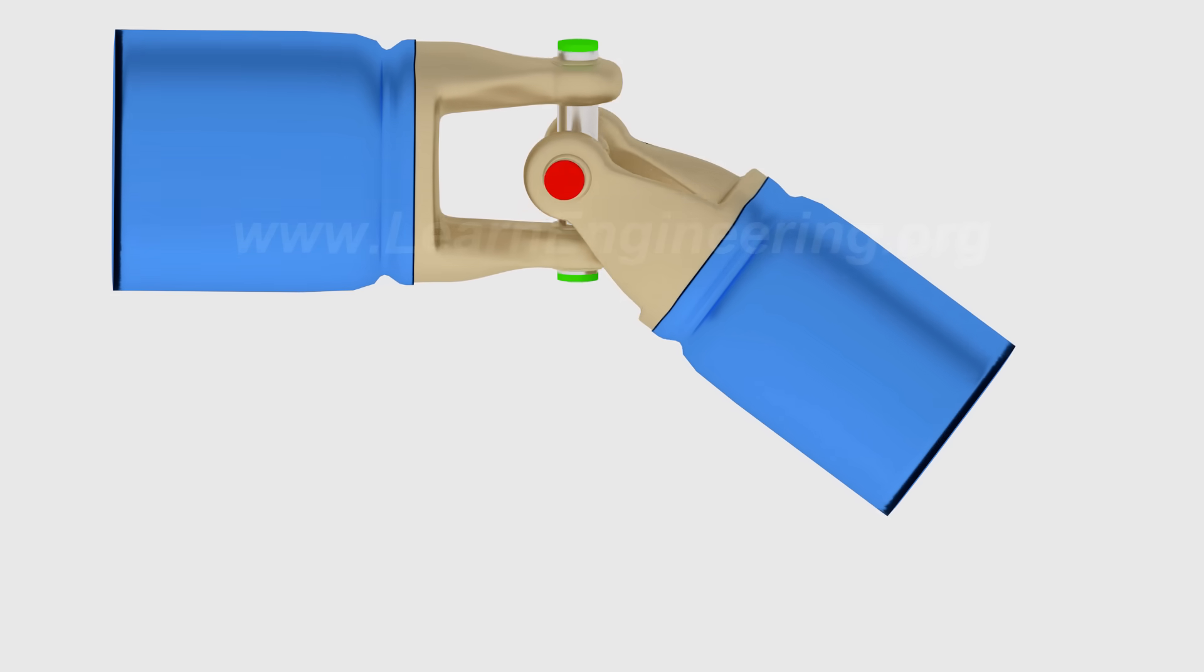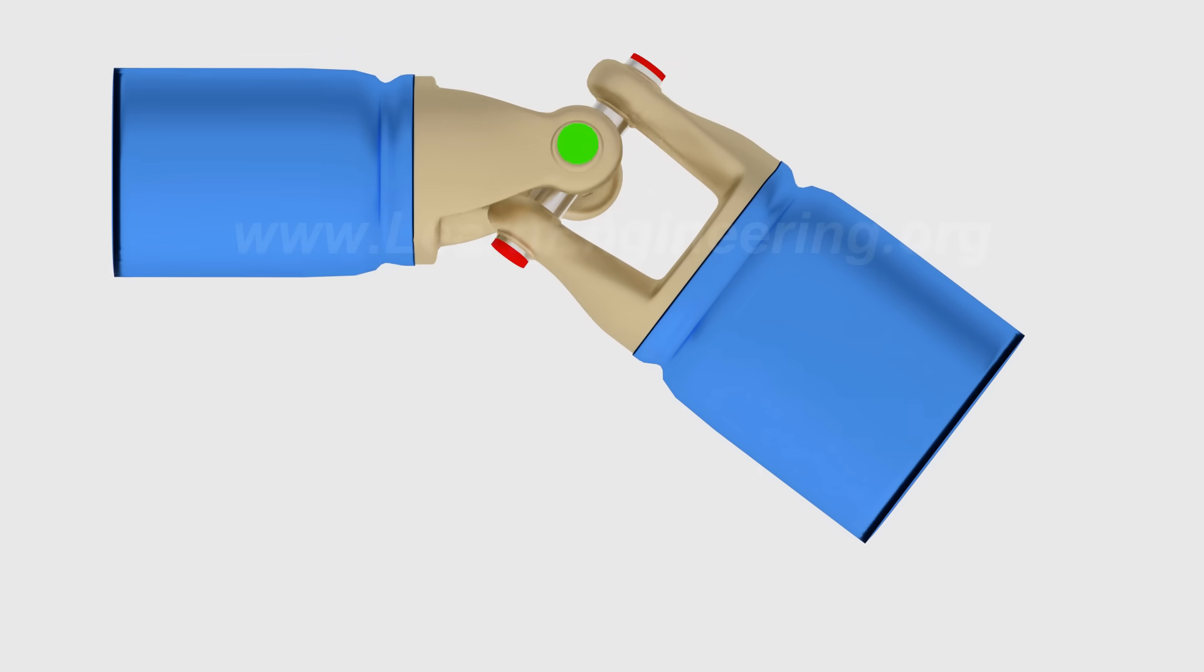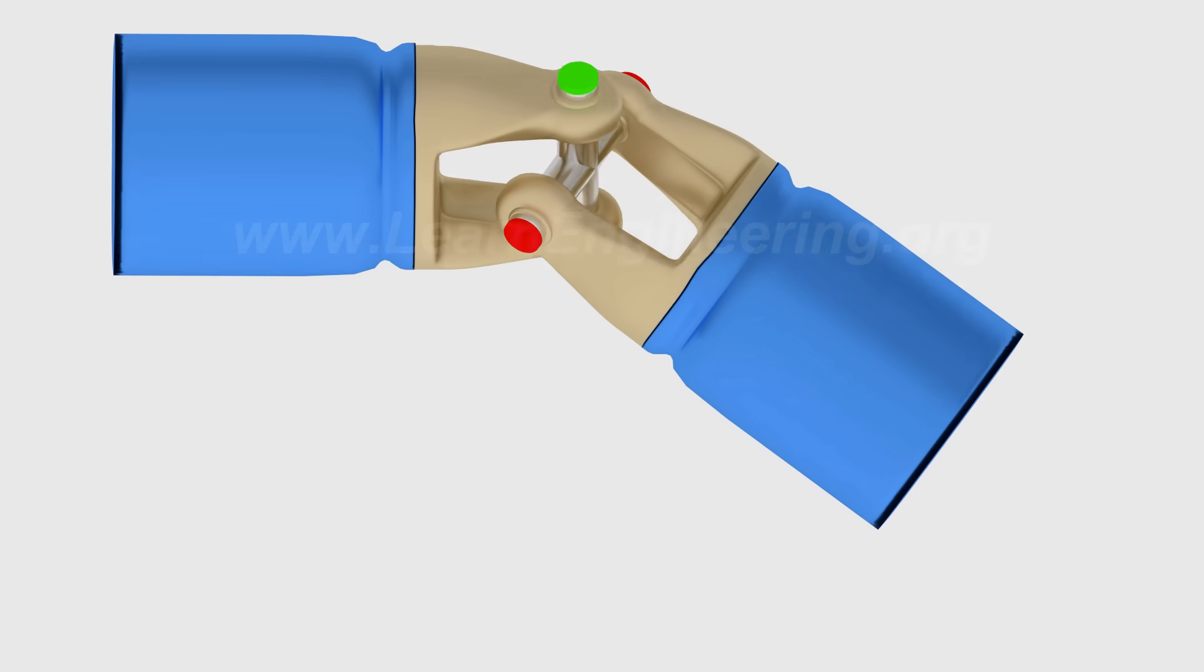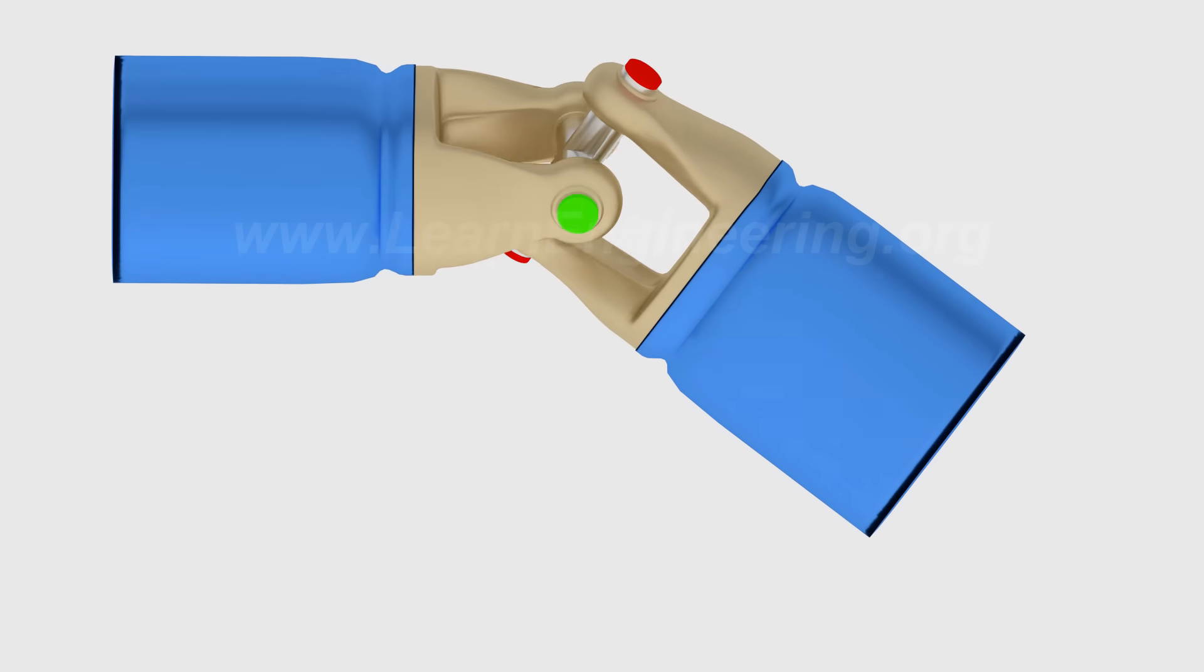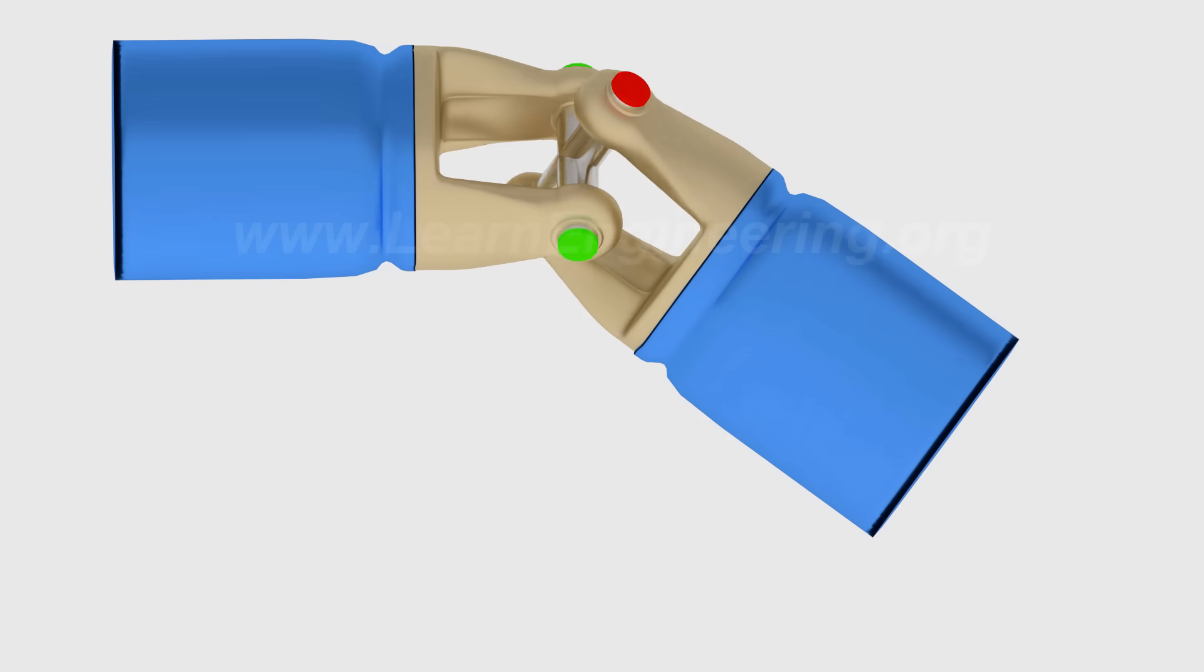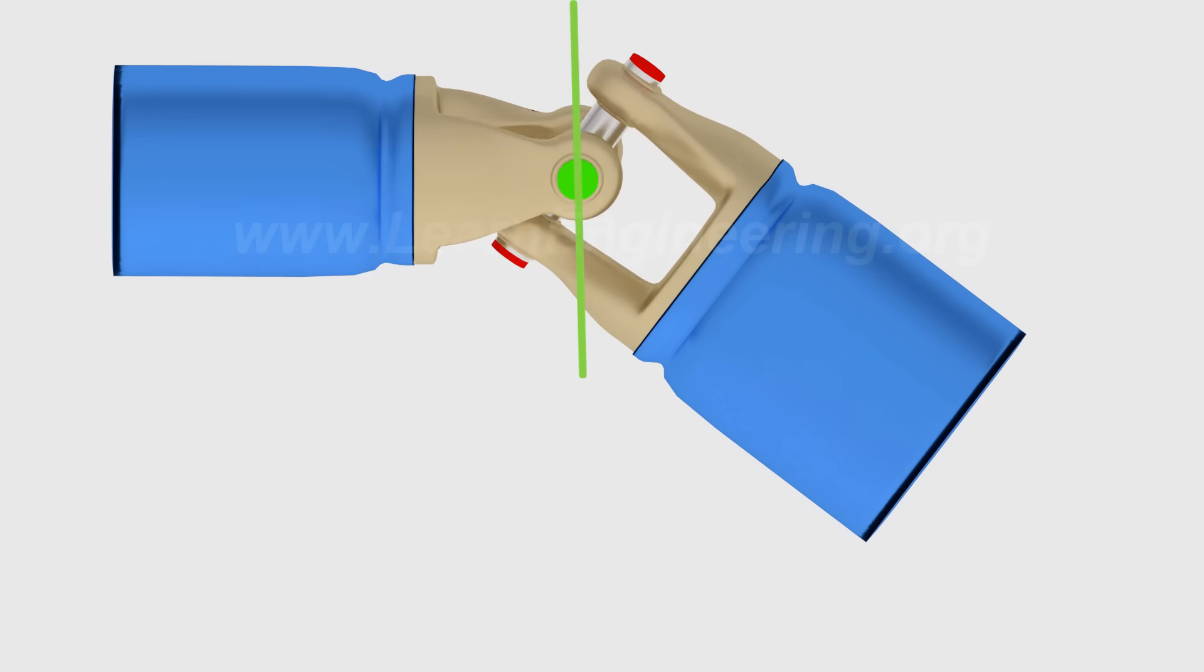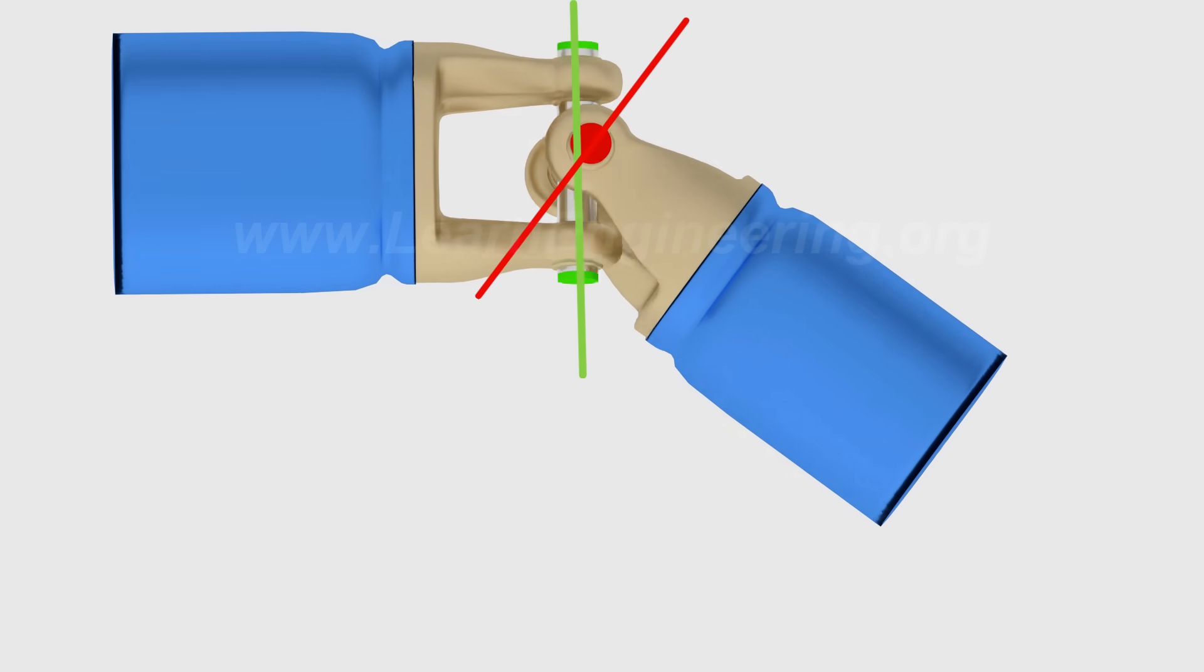To understand why, just note the behavior of the red and green ends of the cross. You can see that the green ends, which are connected to the input shaft, turn along a vertical plane, while the red ends, which are connected to the output shaft, have to move along a different plane.